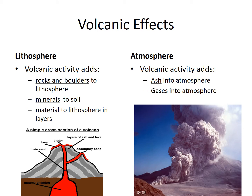What is the effect of the volcano on the lithosphere and the atmosphere? Volcanic activity adds rocks and boulders to the lithosphere, minerals to the soil, and material to the lithosphere in layers. Lava flows down and builds a mountain, which is how islands and mountain ranges are formed. Volcanoes also add ash and gases to the atmosphere, especially during large explosions, but pretty much any time a volcano is active.